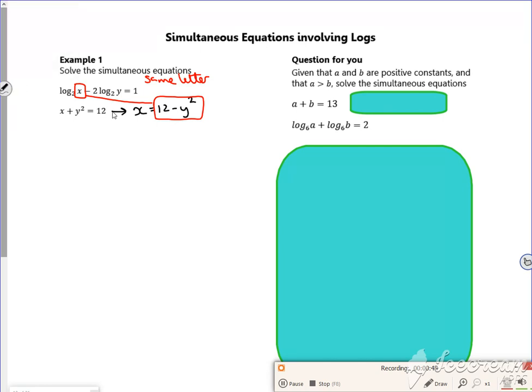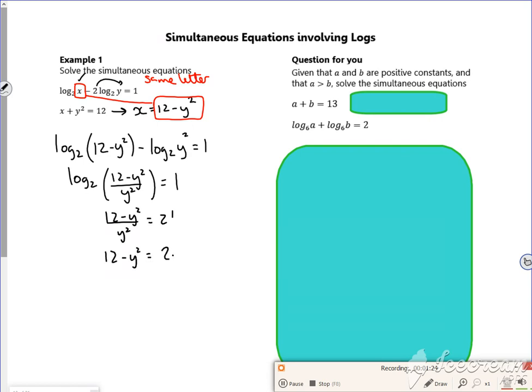So I've got log to base 2 of 12 minus y squared, so that's changing the x. Minus, take that 2 up, log to base 2 of y squared is equal to 1. Combine these as log to base 2. So 12 minus y squared over y squared is equal to 1. Do 2 to the power of to get rid of log to base 2. So 12 minus y squared over y squared is 2 to the power 1, which is 2.